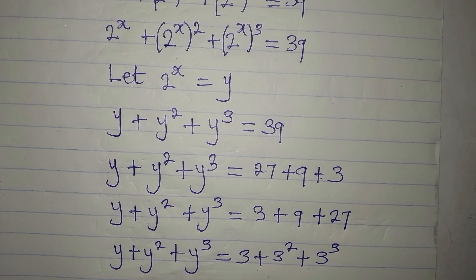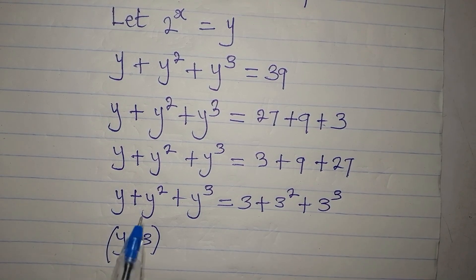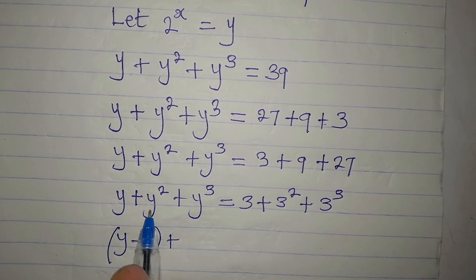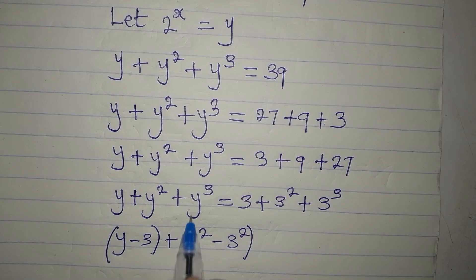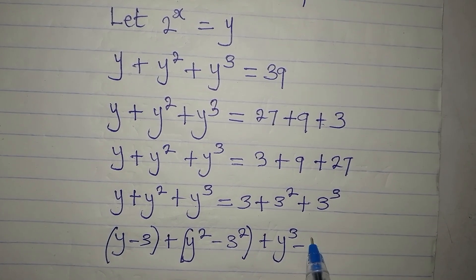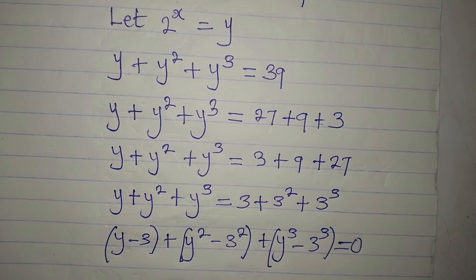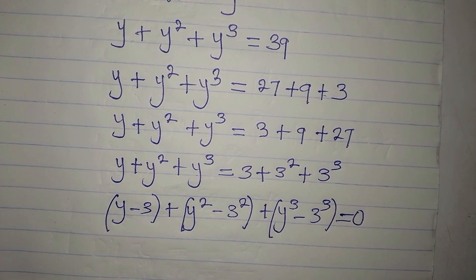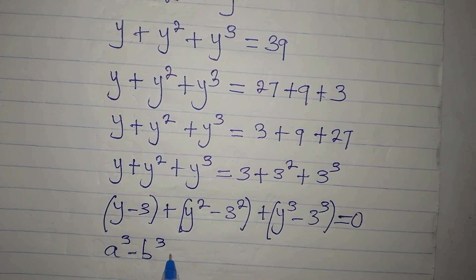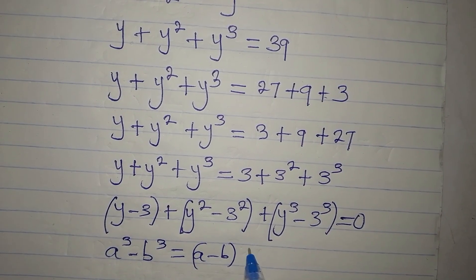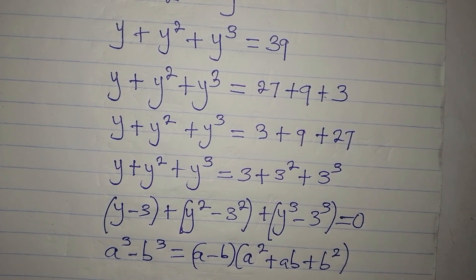If you look at the left-hand side and the right-hand side, you see that they are now in the same form. So we bring everything to the left: we have y minus 3, plus y squared minus 3 squared, plus y cubed minus 3 cubed, all equal to zero. Recall the difference of two cubes: a cubed minus b cubed equals (a minus b)(a squared plus ab plus b squared).